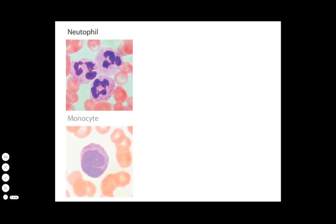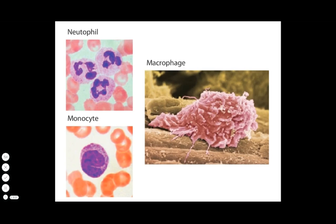Neutrophils make up the vast majority of white cells in the blood. These cells, along with monocytes, can engulf microbes by a process called phagocytosis. Monocytes can migrate out of blood vessels into various tissues and differentiate into a few cell types, including macrophages.